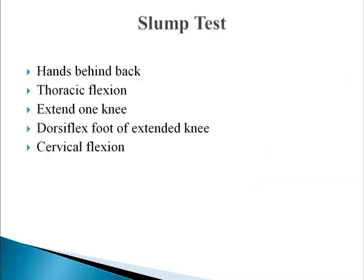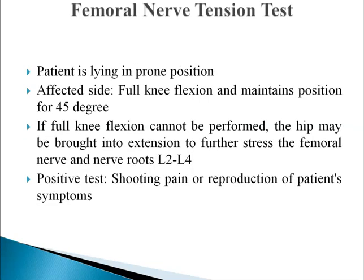The slump test: the patient sits with hands behind the back. The thoracic spine is in a flexed position, followed by extension of one knee, dorsiflexion of the foot of the extended knee, and cervical flexion.